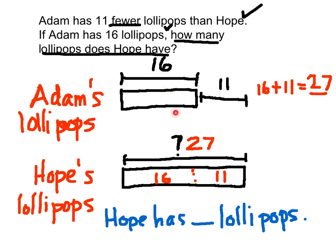Do both 16 and 11 make 27? Let's check: 1 plus 6 is 7, yes; and 1 ten plus 1 ten makes 2 tens — yes, 27 is our answer. So we go and read our question: Hope has blank lollipops. These are Hope's lollipops — what is the label for Hope's lollipops? 27. So we place a 27 right back into the sentence: Hope has 27 lollipops.